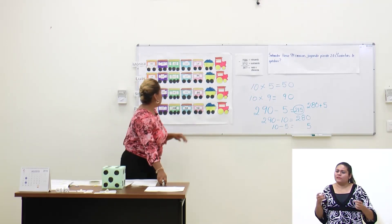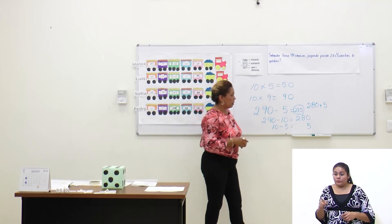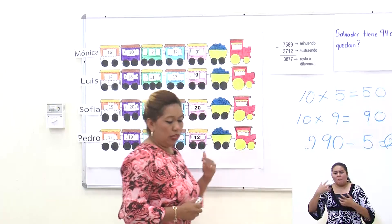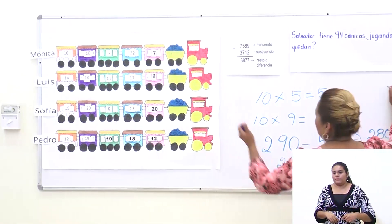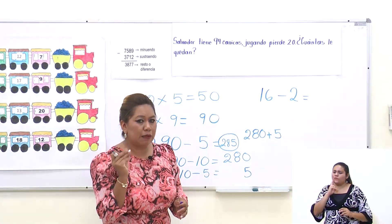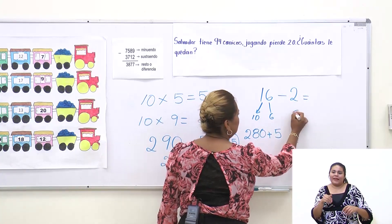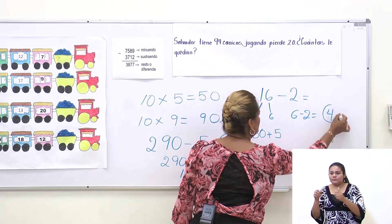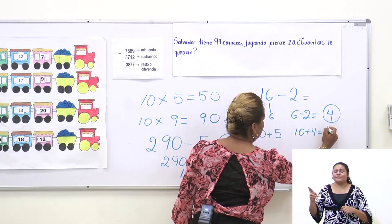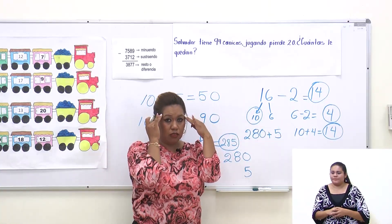¿Cómo lo hicieron? Cuando nosotros hacemos una resta mental, podemos utilizar el sobreconteo. Por ejemplo, si yo hago 16 menos 2, puedo descomponer el 16 en 10 y 6. Al 6 le quito 2 y me quedan 4. Esos 4 se los sumo a la decena: 10 más 4 tendría 14. Y ya encontré el resultado. Todo esto se hace de manera mental.